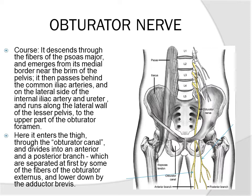It then runs along the lateral wall of the lesser pelvis to the upper part of the obturator foramen. Picture the skeletal pelvis with the left and right obturator foramen like a pair of eyeballs — that's where the nerve emerges from the pelvis to enter the leg. As it passes through the obturator foramen, it enters the thigh through the obturator canal, then divides into anterior and posterior branches, initially separated by fibers of the obturator externus muscle, and later by the adductor brevis muscle.